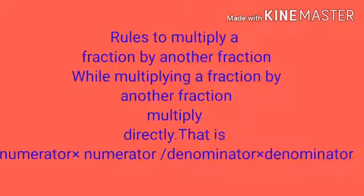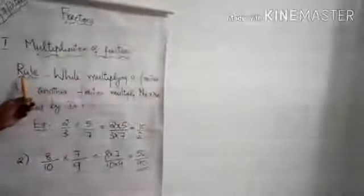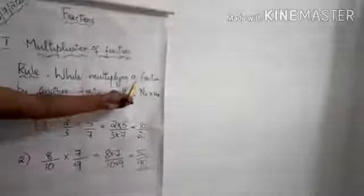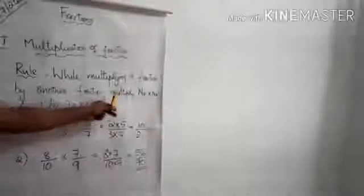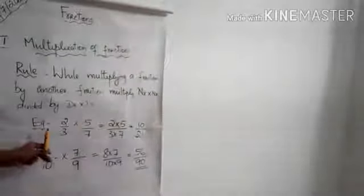Rules to multiply a fraction by another fraction: while multiplying a fraction by another fraction, multiply directly — that is, numerator into numerator divided by denominator into denominator. Rule one, multiplication of fractions: multiply numerator into numerator divided by denominator into denominator.